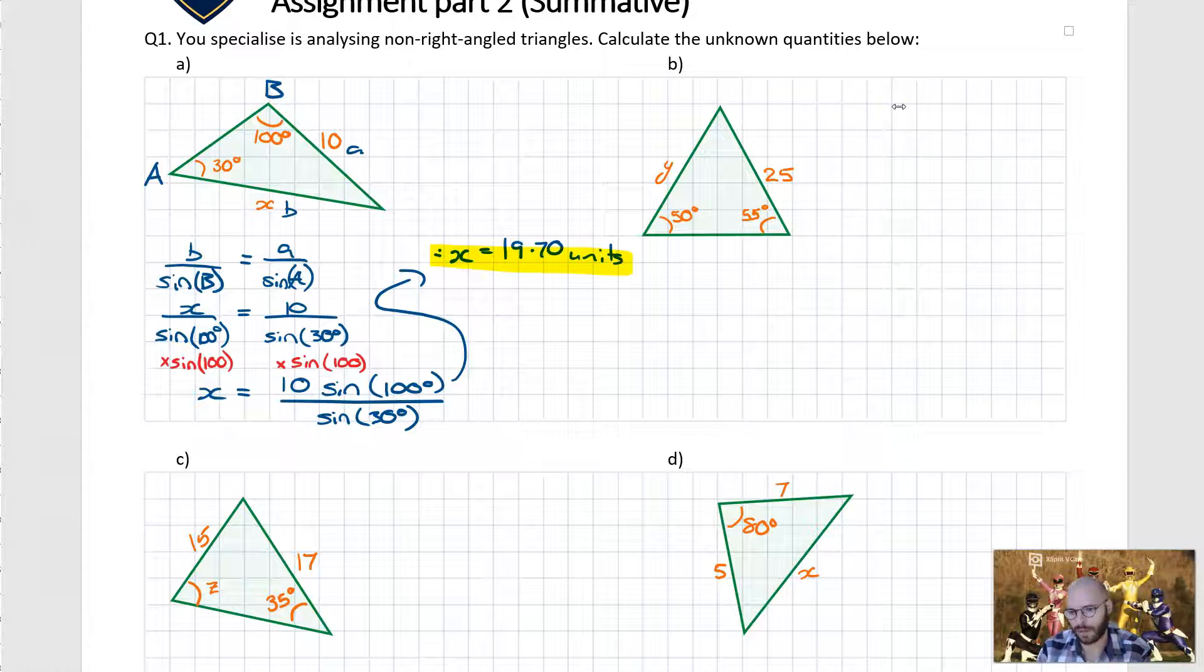Part B we have a similar problem. We have two known angles A and B with complementary side lengths. Opposite angle A we have side B, opposite angle B we have side A. So once again because they're complementary angle sides we're going for the sine rule. Now unknown in this case is Y which corresponds to side B.